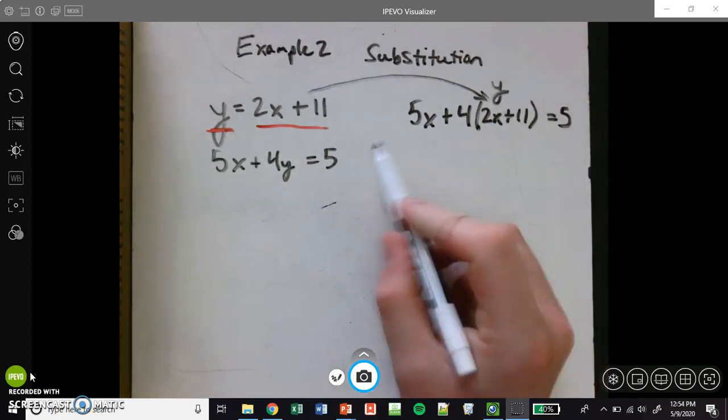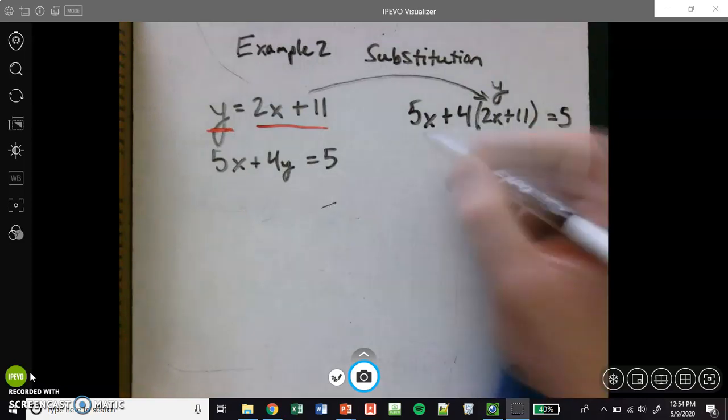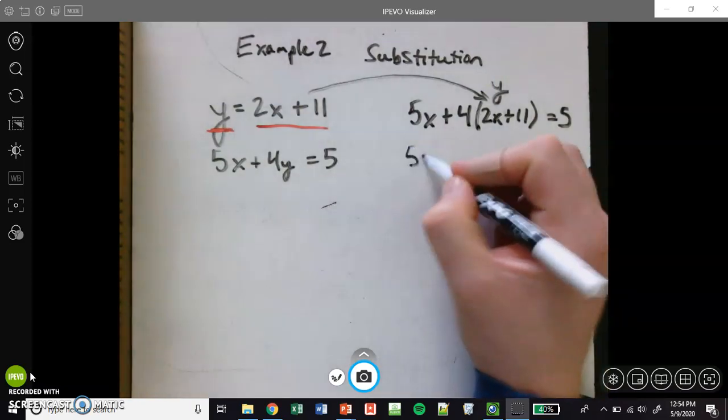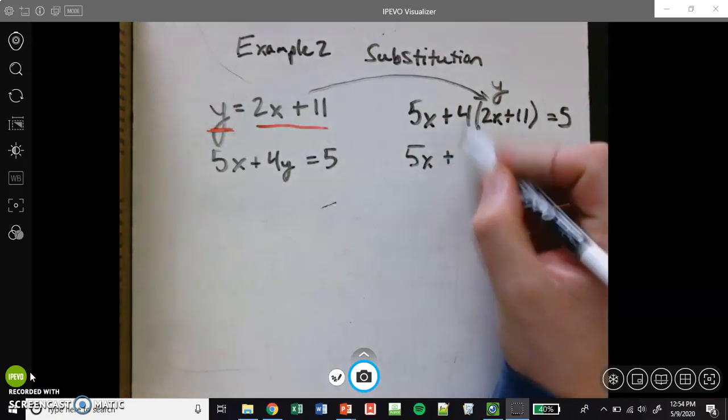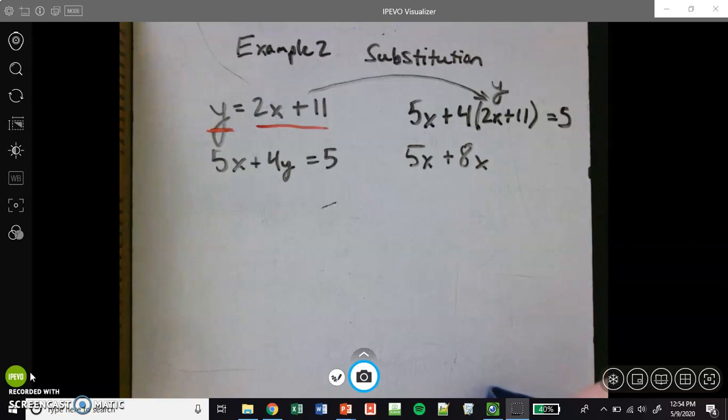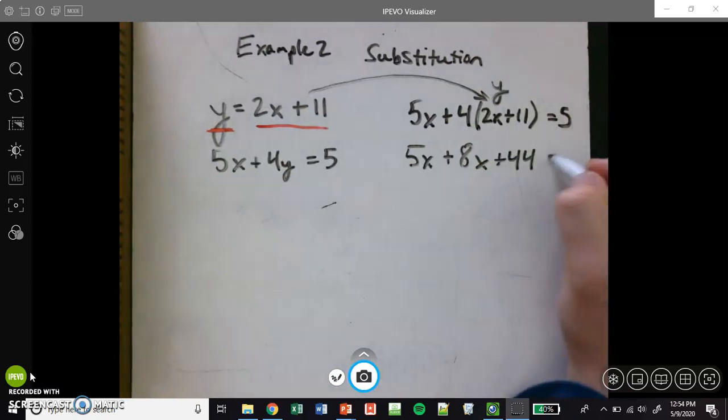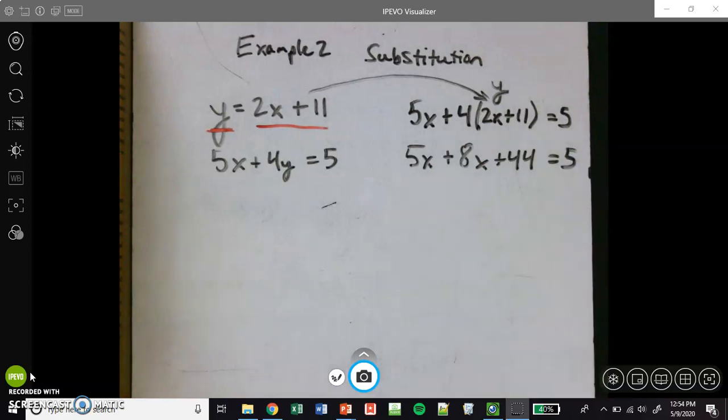So again, the benefit of doing that is now we only have x's in our formula, in our equation. And so what we'll do now is we'll solve this for x. So the first thing I'll do is I'll distribute 5x plus 4 times 2, that's 8x. 4 times 11, that's 44, and that still equals 5.